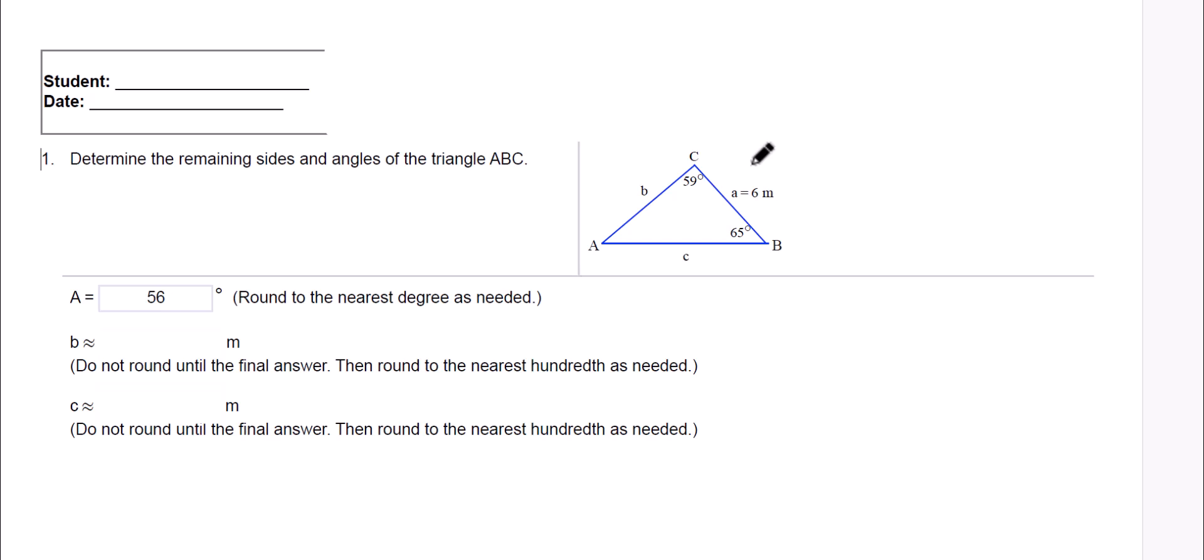Determine the remaining sides and angles of the triangle ABC. The first thing that I like to look for is how many angles do we have? And we're pretty lucky here because they give us two angles right away. And hopefully you remember that a triangle is 180 degrees.